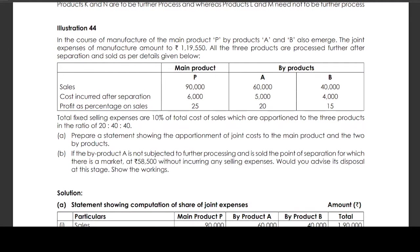In the course of manufacturing of the main product B, by-products A and B also emerged. The joint expenses of manufacturer amount to Rs 1,19,550. All three products are processed further after separation and sold as per details given below. Sales: main product Rs 90,000, by-product A Rs 60,000, by-product B Rs 40,000.